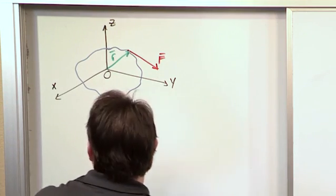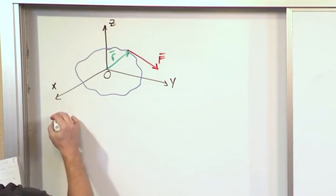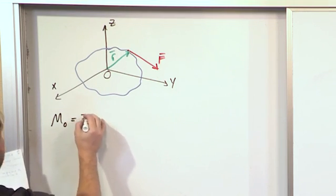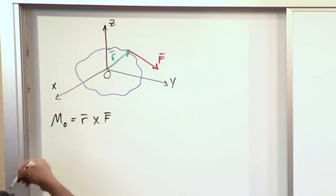So let me go ahead and write that down. This is kind of a lot of review, but the moment about the origin or about point O here is the R vector crossed with the F vector.